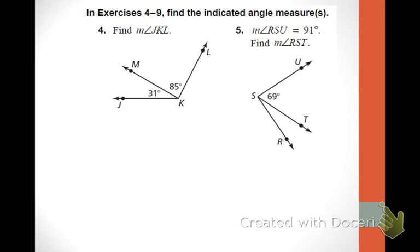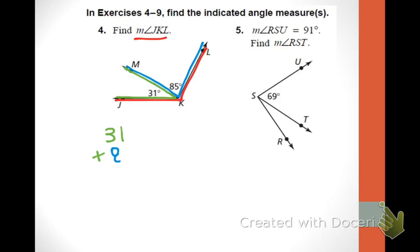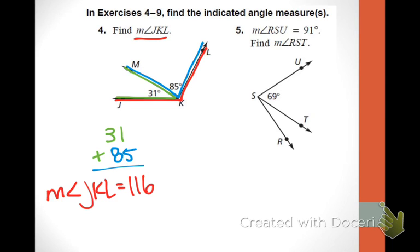We're going to find the measure of angle JKL — that is the outer angle. I have one piece which is 31 and another piece which is 85. To find the outer angle, I add them: 31 plus 85. When you answer, you need to write out the measure of angle JKL equals 116. The inner angle plus the inner angle added together equal the outer angle. Make sure you show your work — just show me what you added or subtracted.